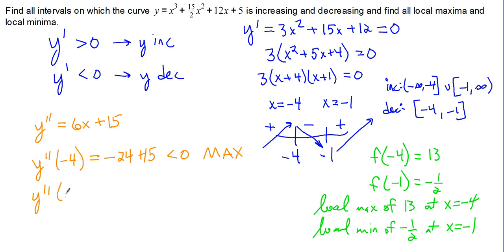y double prime of negative 1 is equal to negative 6 plus 15. Well, negative 6 plus 15 is greater than 0, and that tells us that we have a local minimum there. So we got two different ways to show the exact same thing.